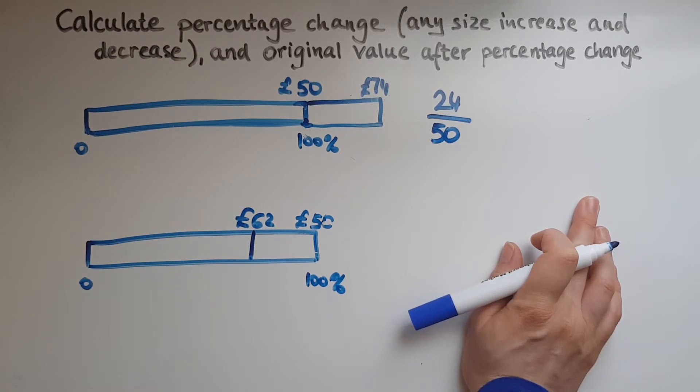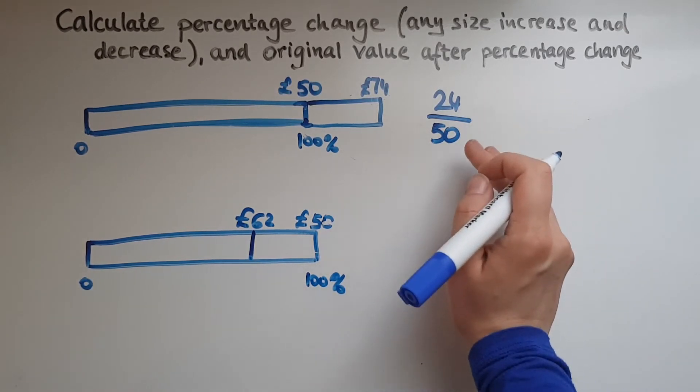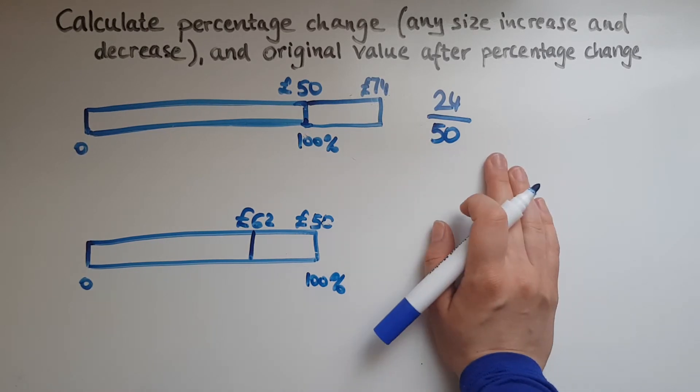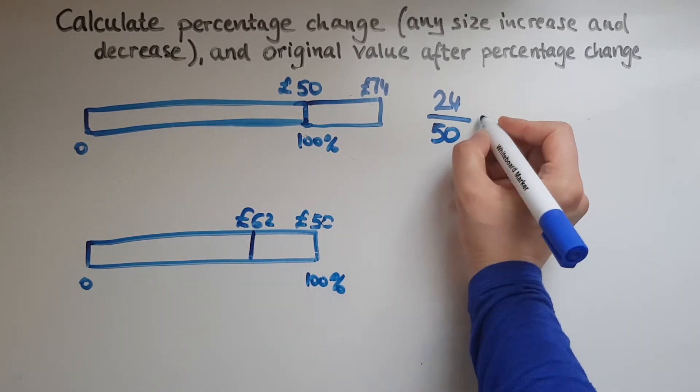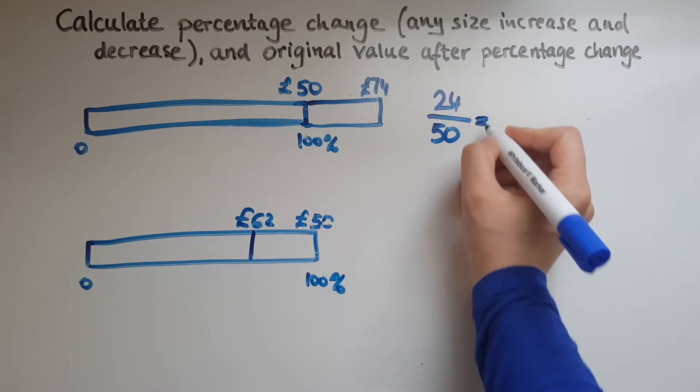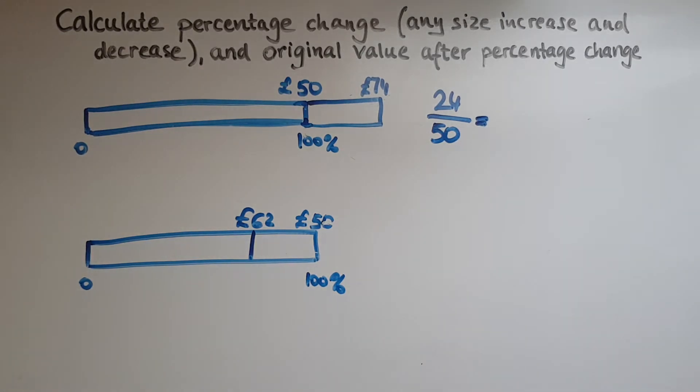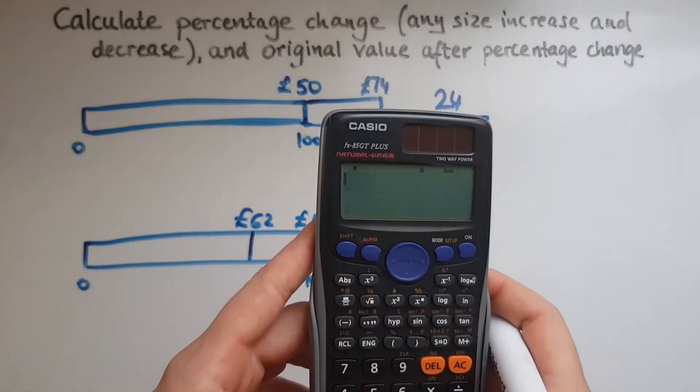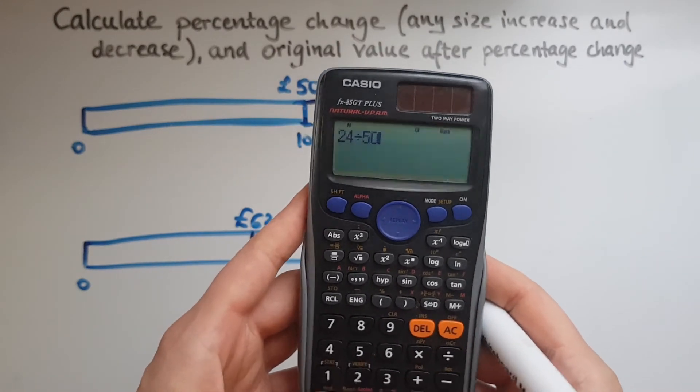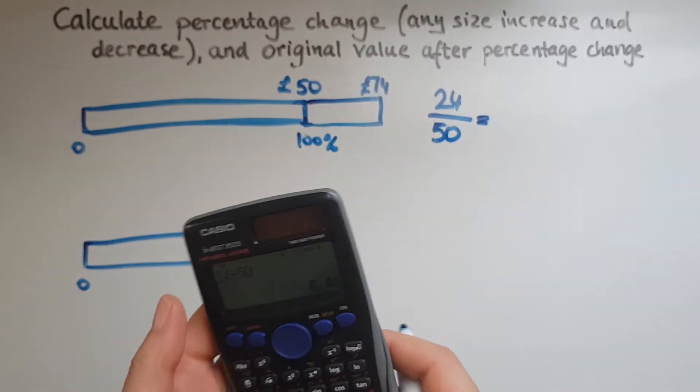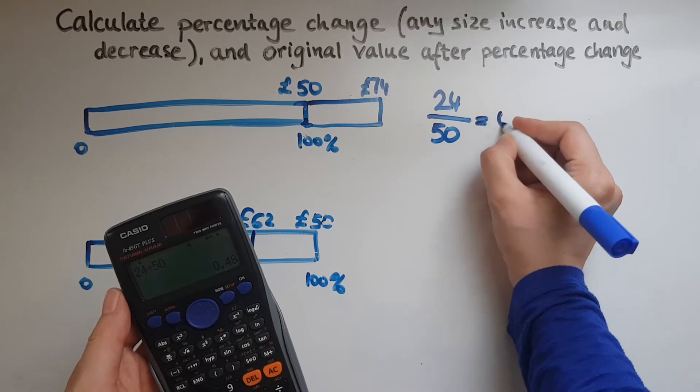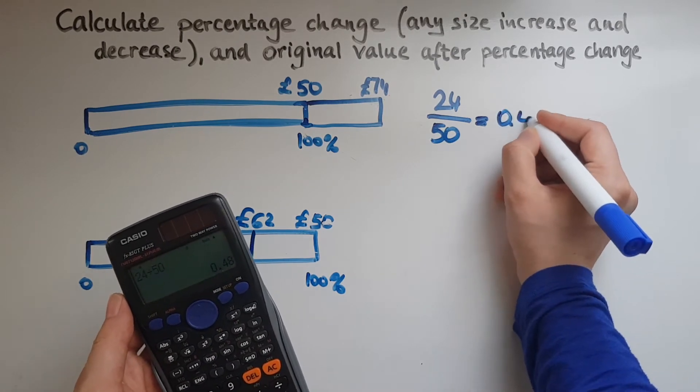So we always say 24 out of 50. The difference out of the original. So 24 divided by 50 gives 0.48.